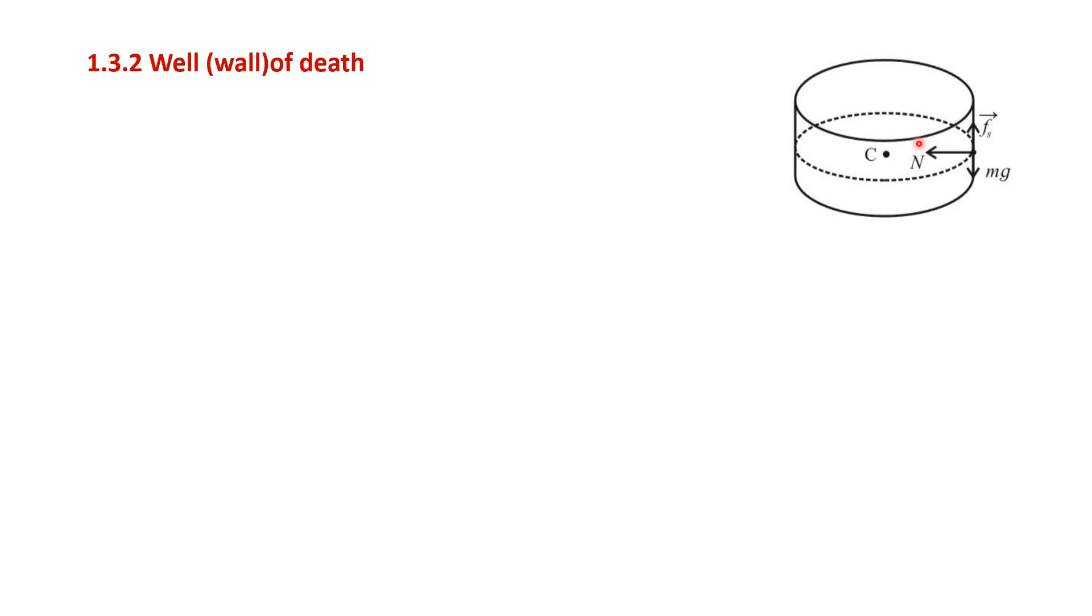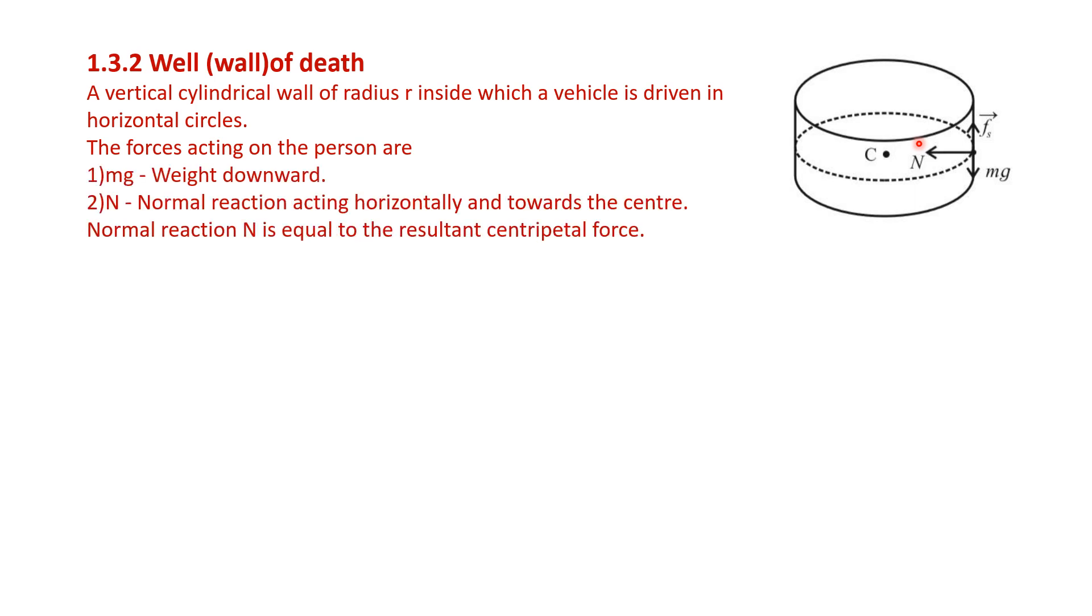There are four or five sentences in which I am going to describe all these things. See, the first sentence is: vertical cylindrical wall of radius R inside which vehicle is driven in a horizontal circle. Now, the forces acting on the person are MG, the weight acting downward, N, normal reaction acting towards the center.